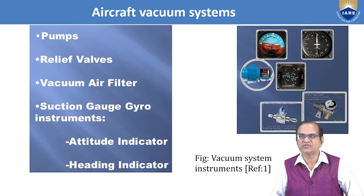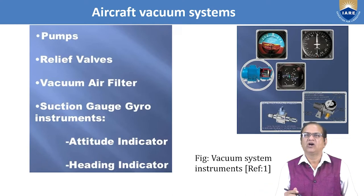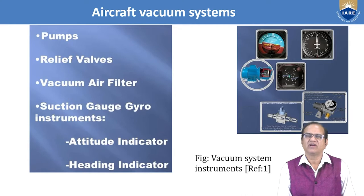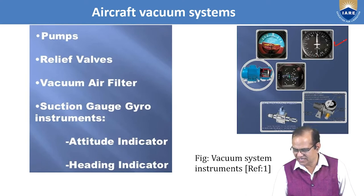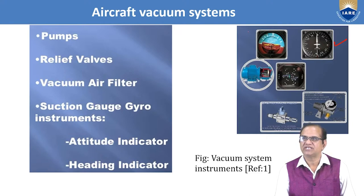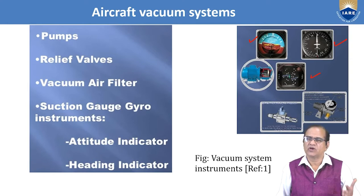For the aircraft vacuum system, several instruments are operated by the aircraft vacuum. Components include a pump, a relief valve, a vacuum air filter, a suction gauge, and gyro instruments — specifically the attitude indicator and the heading indicator. These are operated by the aircraft vacuum system, and these instruments are fitted in the cockpit.